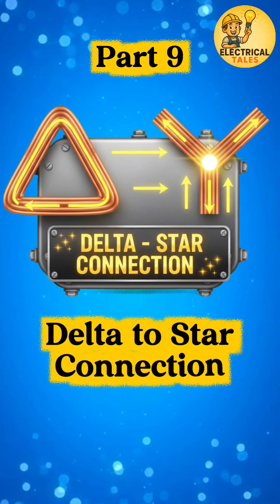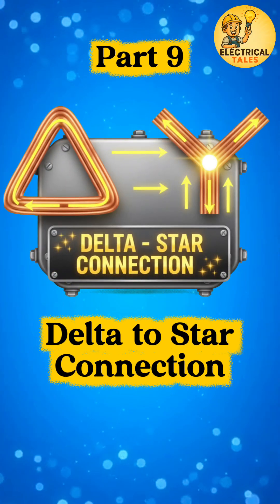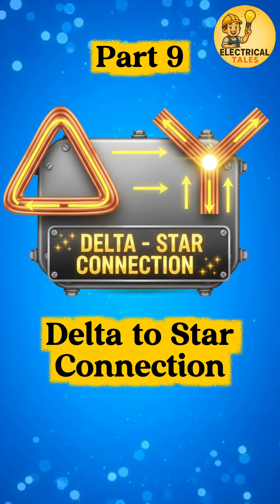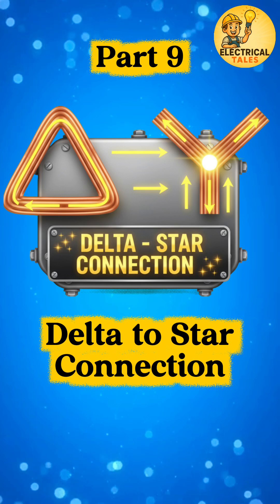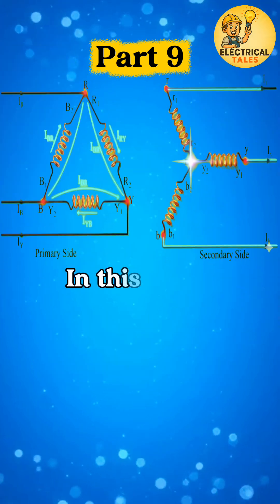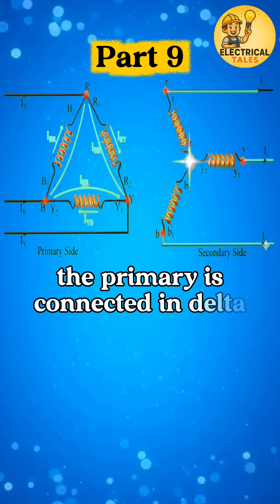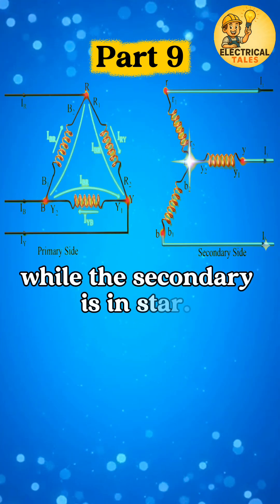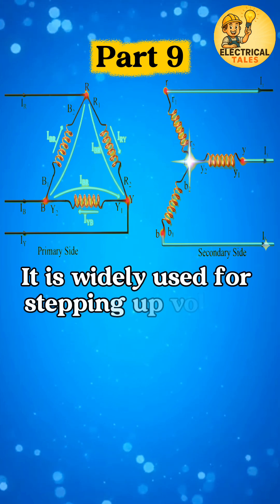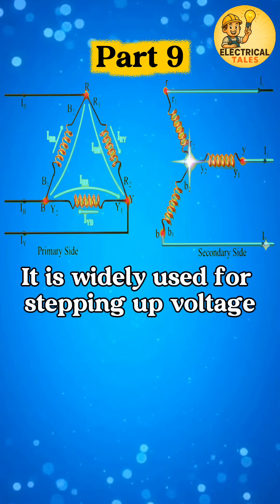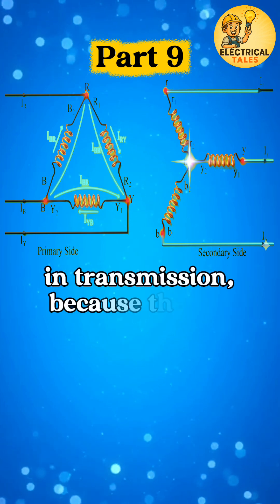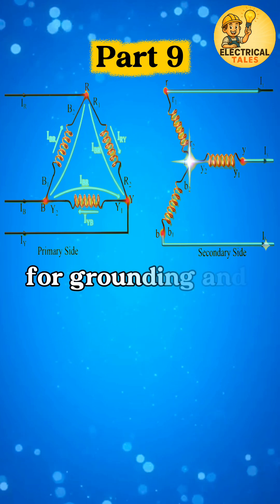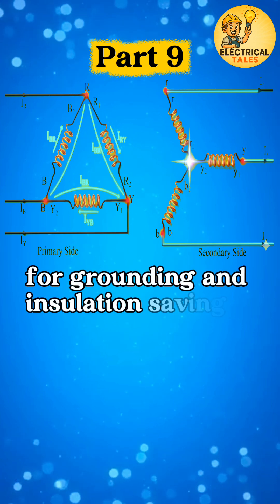After star to delta, let's now uncover the reverse arrangement: the delta to star transformer connection. In this type, the primary is connected in delta while the secondary is in star. It is widely used for stepping up voltage in transmission, because the star side provides a neutral point for grounding and insulation savings.